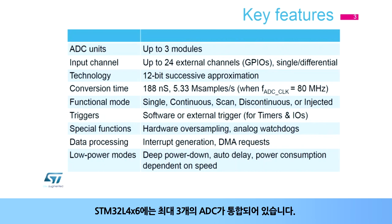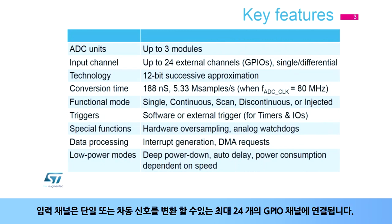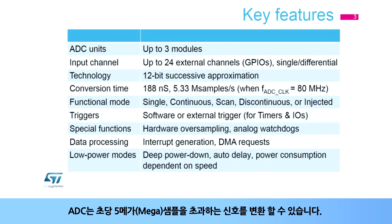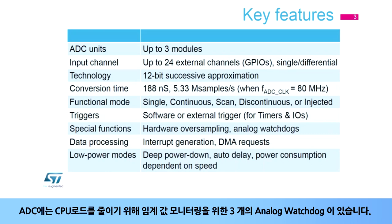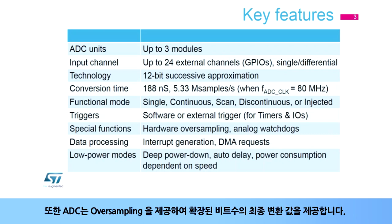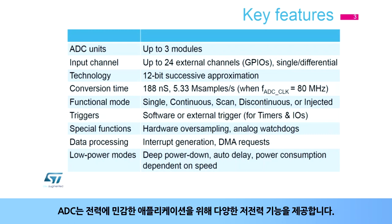Up to three analog to digital converters are integrated inside STM32L4X6 products. The input channel is connected to up to 24 GPIO channels capable of converting signals in either single-end or differential mode. The ADCs can convert signals in excess of five mega samples per second. There are several functional modes and several different triggering methods. The ADC has three analog watchdogs for monitoring thresholds, and also offers oversampling to extend the number of bits presented in the final conversion value. For power-sensitive applications, the ADC offers a number of low-power features.